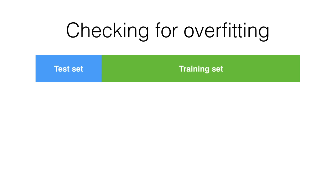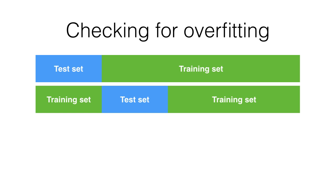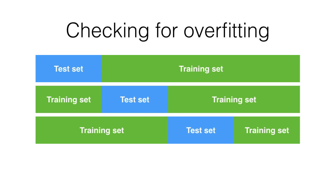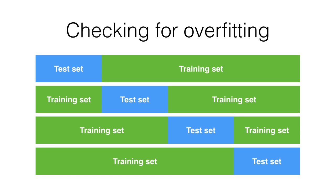That's how we check for overfitting. We train a model on some portion of the data, the training set, and test on another portion, which can be called a holdout set, a test set, or a validation set. When you repeat that process using every data point in the test set once, that's called n-fold cross-validation. Here, it's four-fold cross-validation since there are four folds. Each fold uses three quarters of the data to train the model and one quarter to test the model performance.